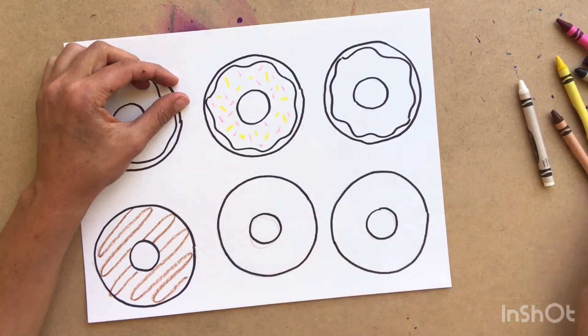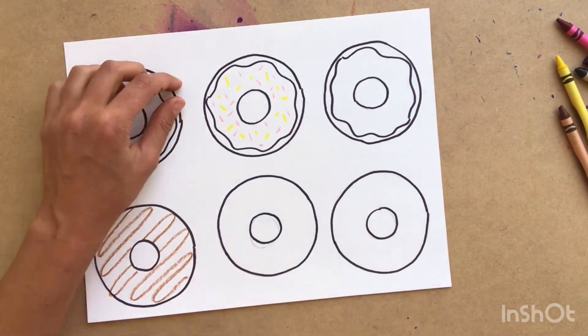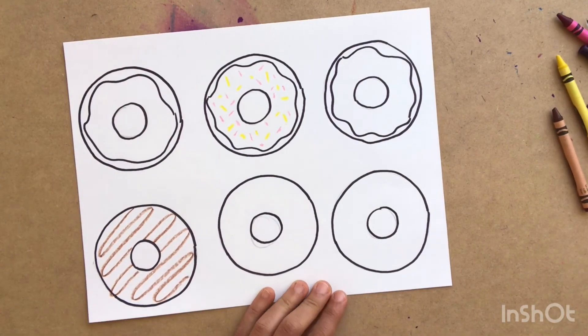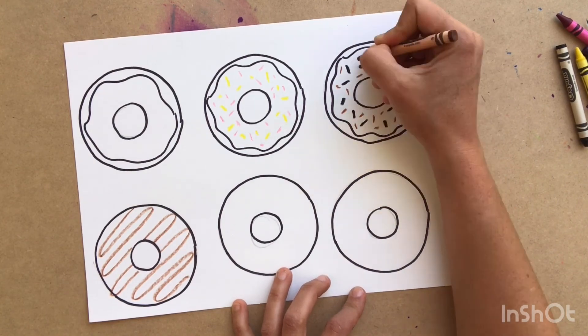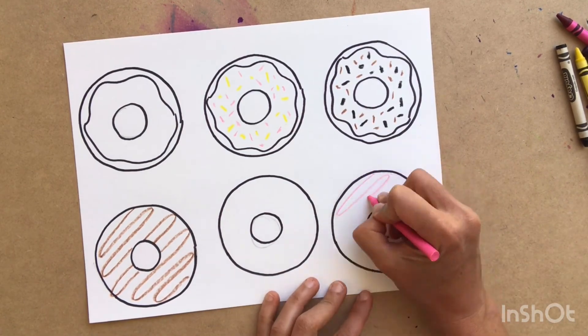Make sure you're pressing down hard when you color with your crayons so that it'll show through later when we add our paint on top. It might look like one of my doughnuts is going to be empty, but just wait until we start the paint. That white crayon is going to show through.